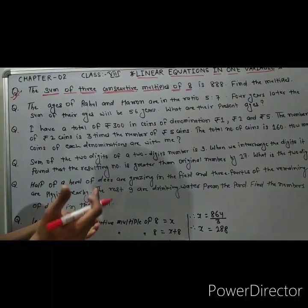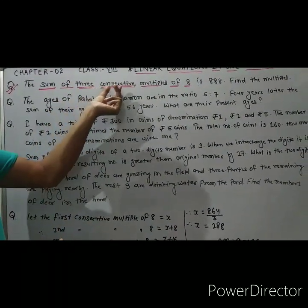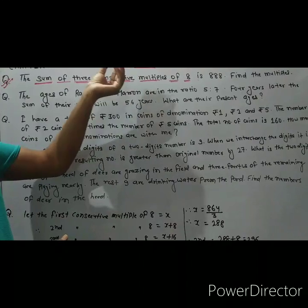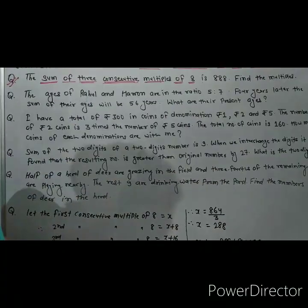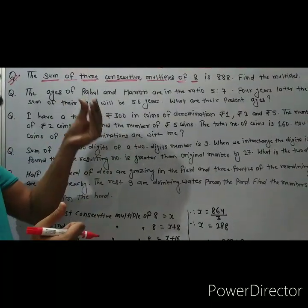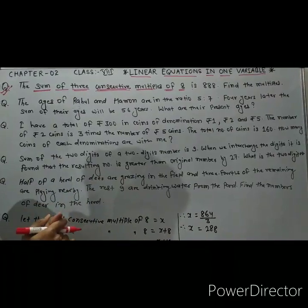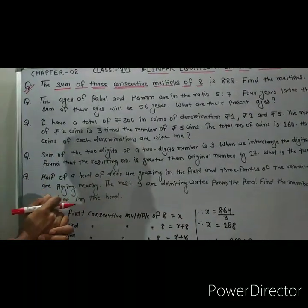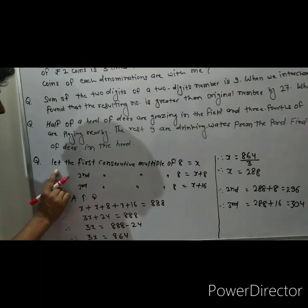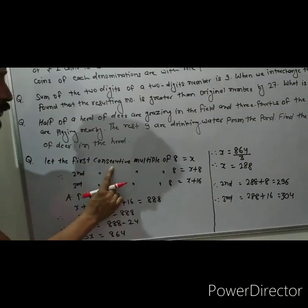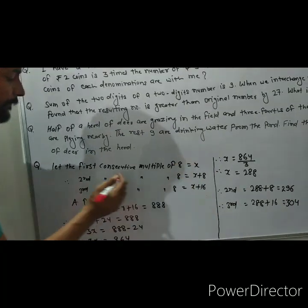The question is asking: when we add 3 consecutive multiples of 8, we get 888. We have to find those 3 consecutive multiples of 8. So let us define: let the first consecutive multiple of 8 be equal to x.